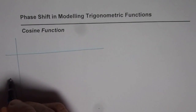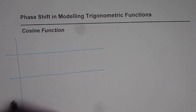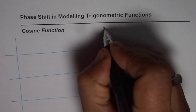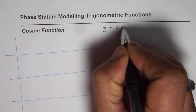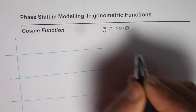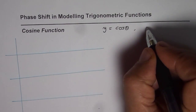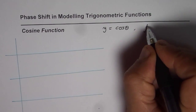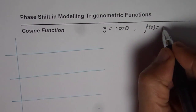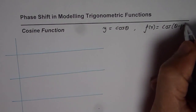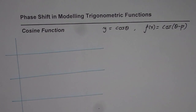I will sketch actually three cosine waves and then we will discuss how to write equations for these cosine waves. Normally the equation of a cosine wave is y equals cos theta, and when we say there is a phase shift, we could write this as f of x equals cos of theta minus p, where p is the phase shift.